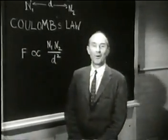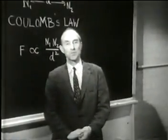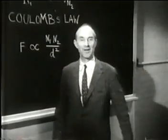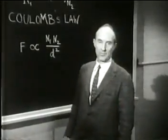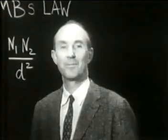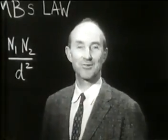La legge dell'inverso del quadrato è valida in molti casi. Per esempio, per l'illuminazione dovuta a una piccola lampada quando la luce si propaga in linea retta nell'aria limpida, non nella nebbia o in acqua torbida che la assorbono. Ecco qua un libro, un altro a distanza doppia, un terzo a distanza tripla di quella del primo, da una piccola lampada. La legge dell'inverso del quadrato è caratteristica di qualsiasi cosa che si propaghi in linea retta senza assorbimento.